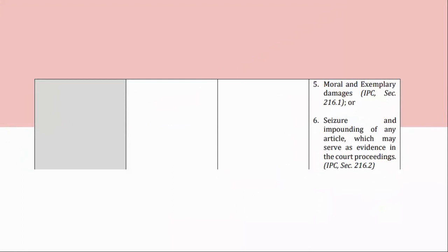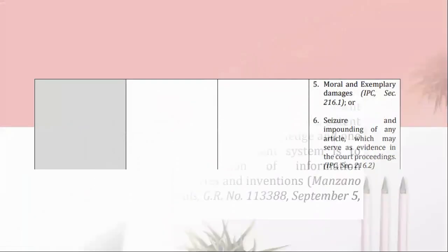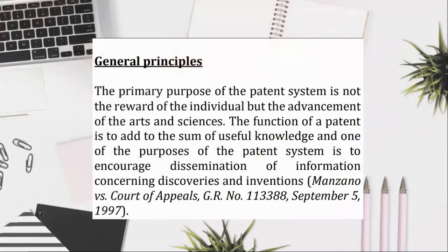Patents — General Principles. The primary purpose of the patent system is not the reward of the individual but the advancement of the arts and sciences. The function of a patent is to add to the sum of useful knowledge, and one of the purposes of the patent system is to encourage dissemination of information concerning discoveries and inventions. Manzano v. Court of Appeals, GR No. 113,388, September 5, 1997.